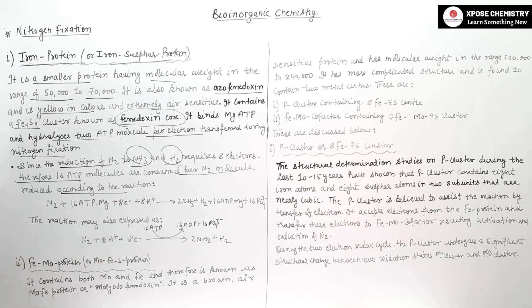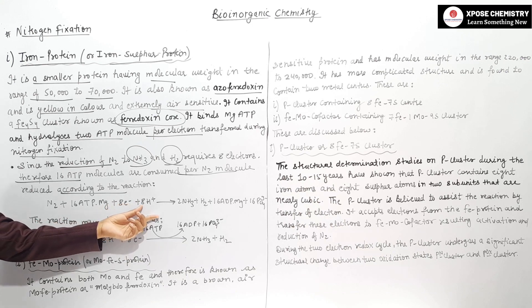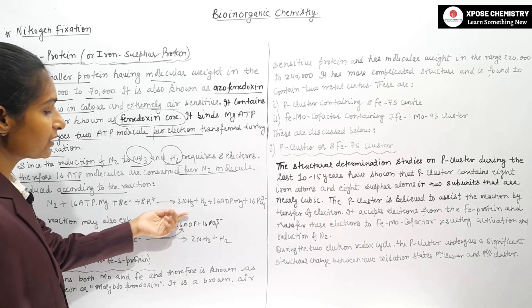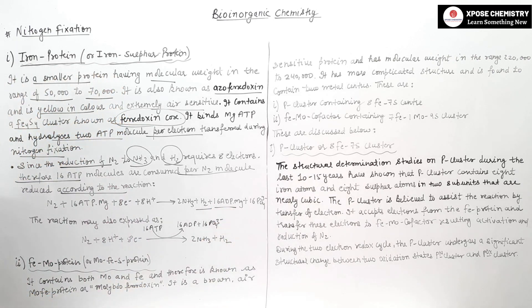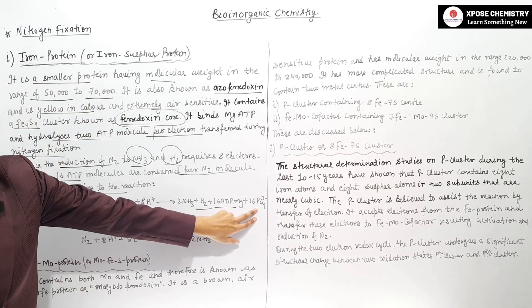According to the reaction: N2 plus 16 ATP-Mg plus 8 electrons plus 8 hydrogen ions gives 2 NH3 and H2 plus 16 ADP-Mg plus 16 phosphate 3 negative.